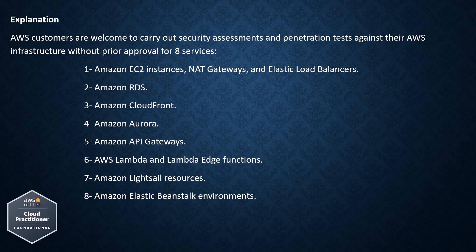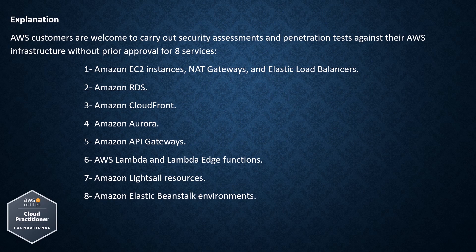Those 8 services are: 1. Amazon EC2 instances, NAT gateways, and elastic load balancers. 2. Amazon RDS. 3. Amazon CloudFront. 4. Amazon Aurora. 5. Amazon API Gateways. 6. AWS Lambda and Lambda Edge functions. 7. Amazon Lightsail resources. 8. Amazon Elastic Beanstalk environments.